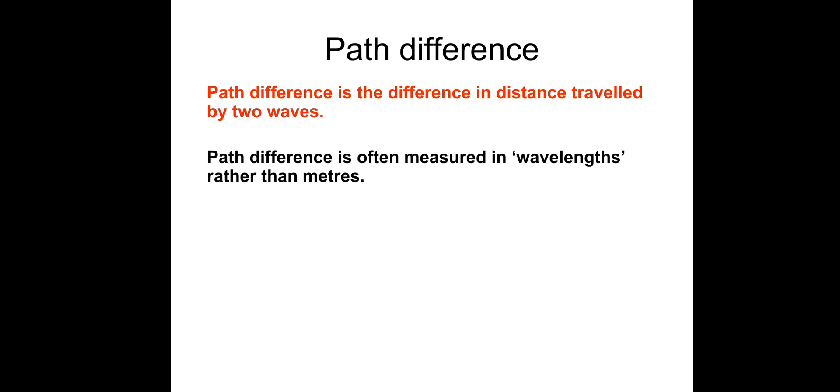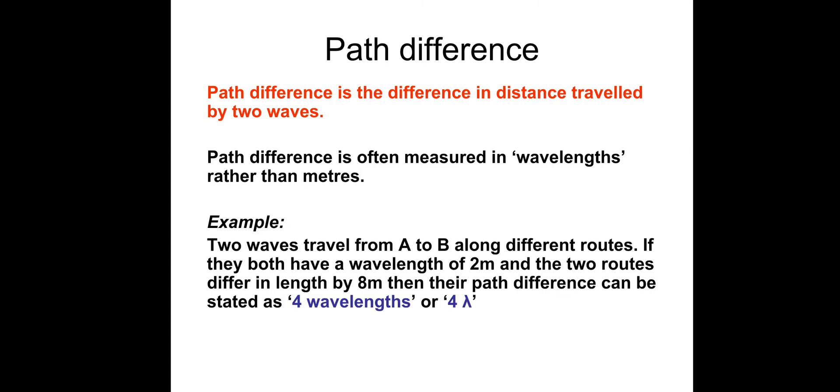Path Difference. Path difference is the difference in distance travel by two waves. Path difference is often measured in wavelengths, rather than metres. In an example, two waves travel from A to B, along different routes. If they both have a wavelength of two metres, and the two routes differ in length by eight metres, then the path difference can be stated as four wavelengths.